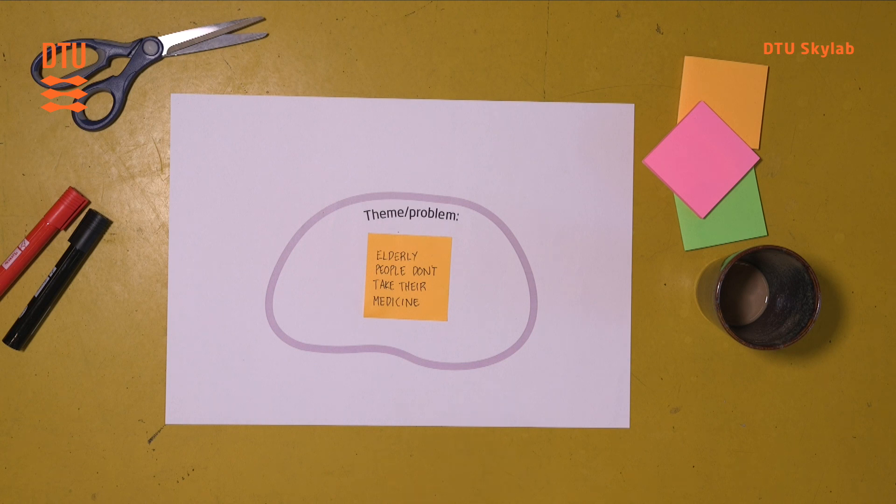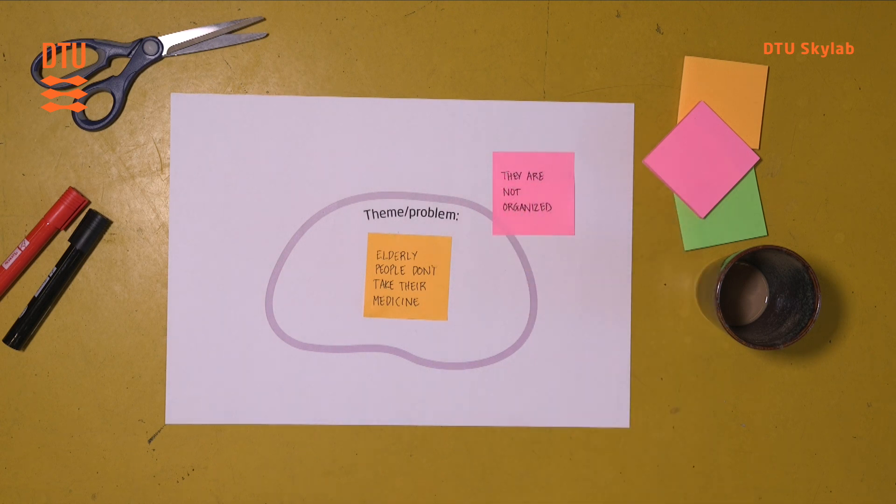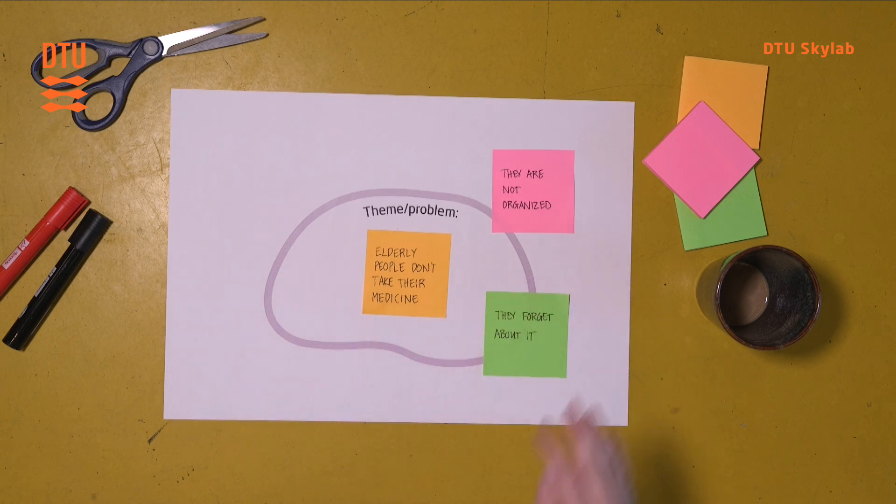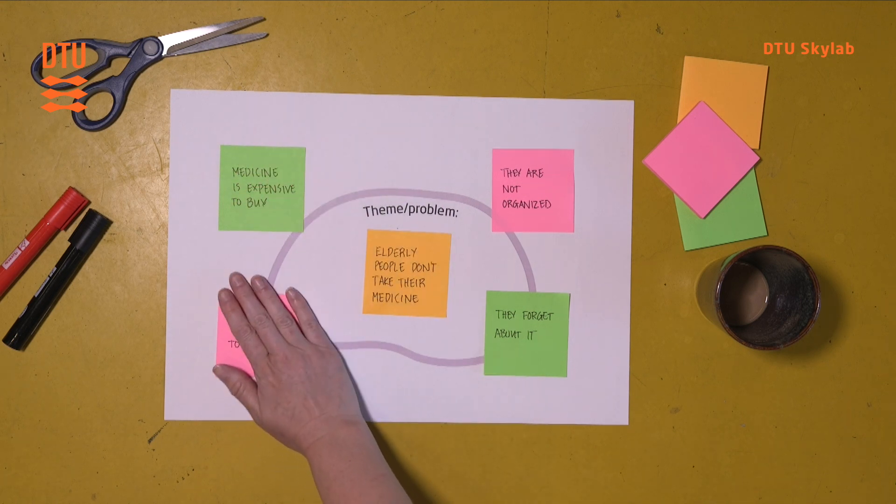And then you simply ask your participants to brainstorm about the assumptions they might have about the reasons why elderly people don't take their medicine. So one might put up here that they might not be organized enough. Some think that it could be because they just forget about it. One other reason could be that medicine is expensive to buy. And then it's difficult for them to get up, for instance.